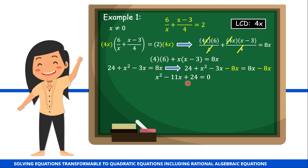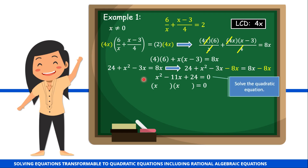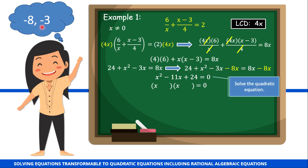We have now transformed our rational equation into a quadratic equation. Let's solve this using factoring. We think of factors of 24 that when added give negative 11. Those numbers are negative 8 and negative 3: negative 8 times negative 3 is positive 24, and negative 8 plus negative 3 is negative 11. So those are the two numbers we place in our factors: x minus 8 and x minus 3. Let's use the zero product property to solve for x.